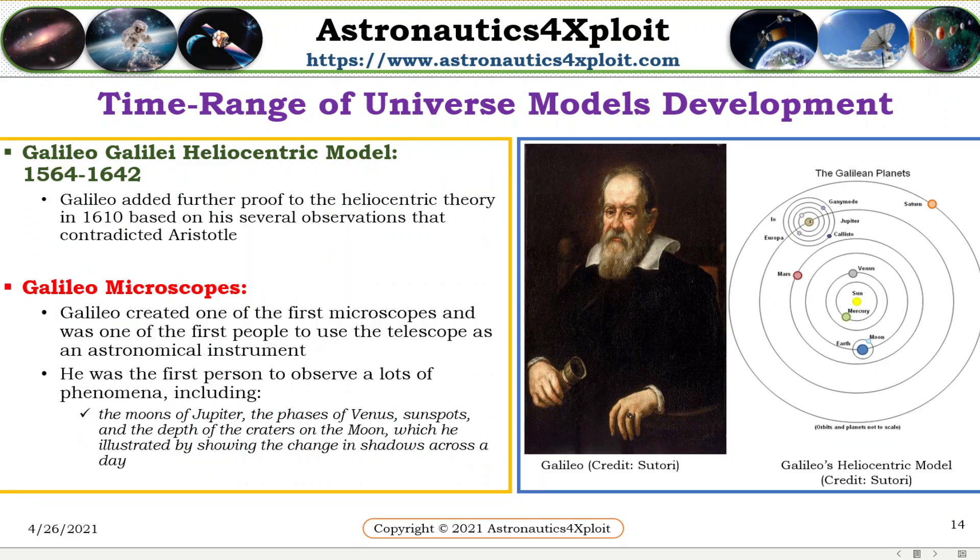Galileo Galileo heliocentric model: Galileo added further proof to the heliocentric theory in 1610, and this is based on several observations that contradicted Aristotel's observations. Galileo created one of the first microscopes and was one of the first people to use the telescope as an astronomical instrument. He was the first person to observe phenomena such as the moons of Jupiter, the faces of Venus, sunspots, and the depth of the craters on the moon, which he illustrated by showing the change in status across a day.